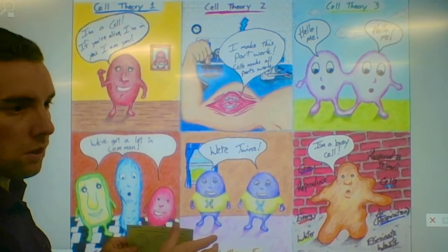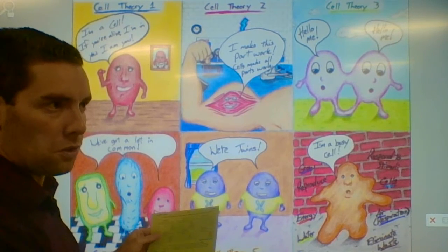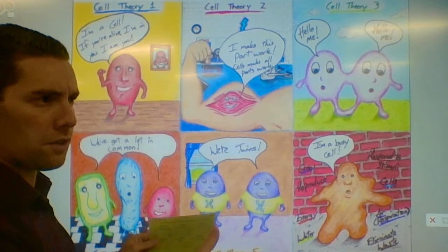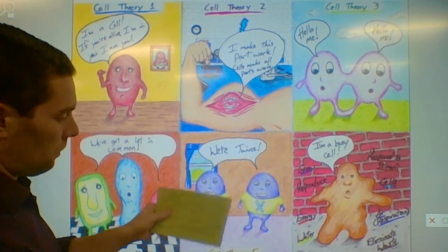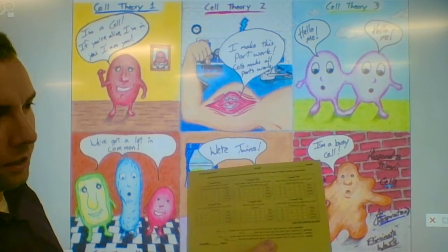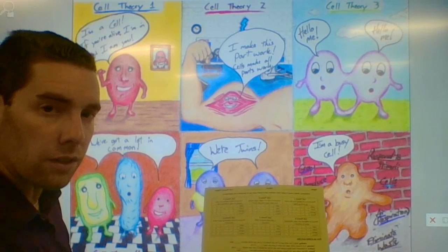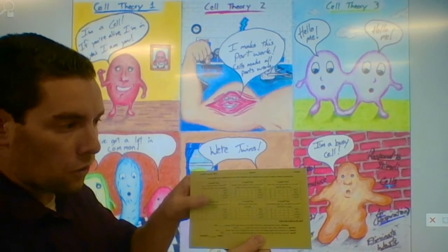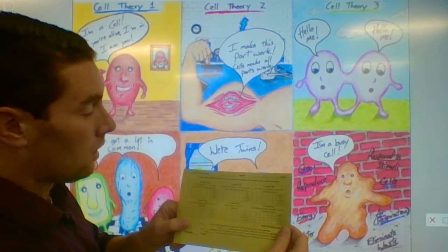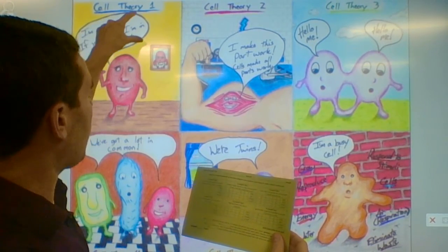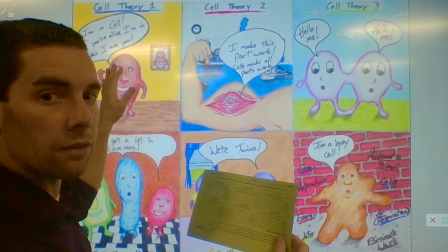We're going to take a single sheet of paper — you should have gotten one from Mrs. Reynolds or me, either a regular sheet of printer paper or a slightly larger one if you really like to draw. You also have a rubric, a little green sheet of paper. It has each individual section for each part of the cell theory. There are six cell theory statements, and for each one there are four things to do: put a label, color it, have a caption where the cells say something, and write the cell theory statement on the back of the paper behind that box.